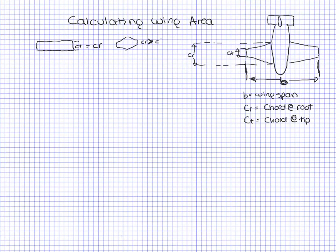Taper ratio is lambda. When lambda equals one, we have a rectangular wing. When lambda equals zero, we have a highly tapered wing or a delta wing with the chord at the tip pretty much zero. When we have lambda between one and zero, we have a tapered wing.